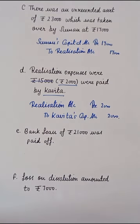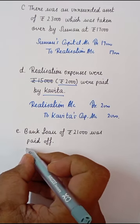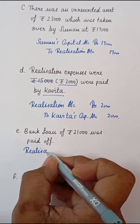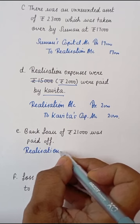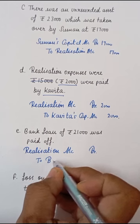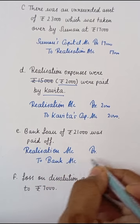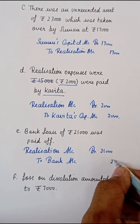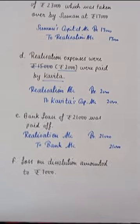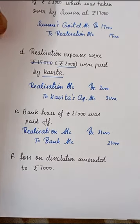पाँचवाँ transaction: Bank loan of Rs.21,000 was paid off। Bank loan एक outside liability थी जिसको हमने पहले ही Realization Account में डालके close कर दिया था। अब जब इस liability को pay किया जाएगा तो Realization Account debit होगा, क्योंकि bank loan का account तो पहले ही close हो चुका है। Entry: Realization Account Debit to Bank Account। Liability pay करने से firm का bank balance कम हो रहा है इसलिए bank account credit हो रहा है। किसी भी outside liability को जब pay किया जाता है तो Realization Account को debit किया जाता है।